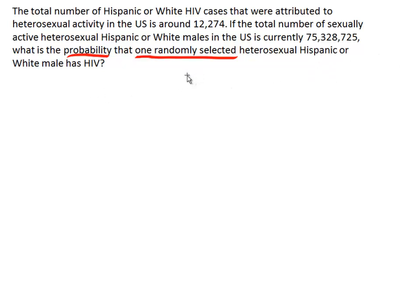It could be the addition rule — some people might think so because of the word 'or' here. But that's not the use of the word 'or' that implies the addition rule. For it to be the addition rule, we'd have to be looking for the probability that someone randomly selected is either Hispanic or white. But that's not what we're doing. We're selecting one person from the group of Hispanic or white males and asking what's the probability that person has HIV. That means we just need a basic probability fraction.